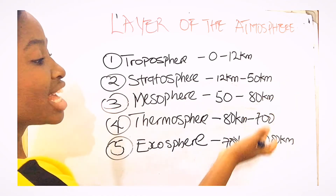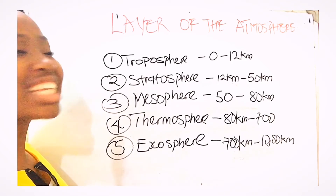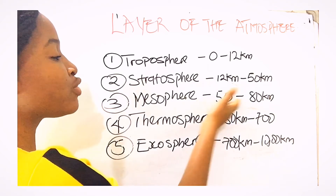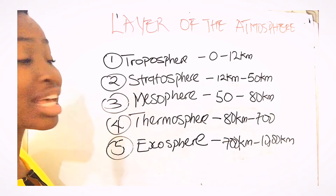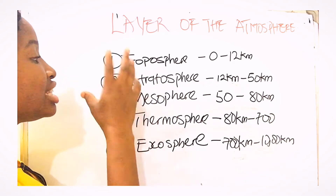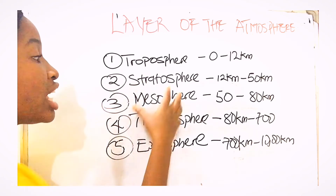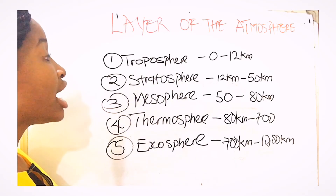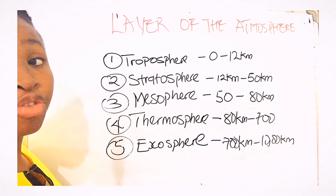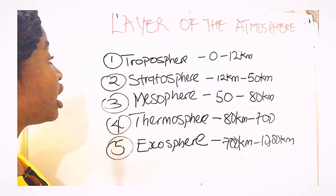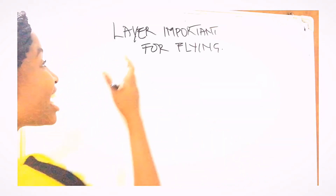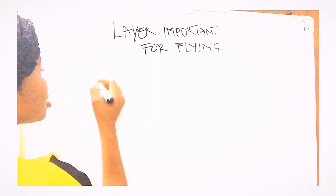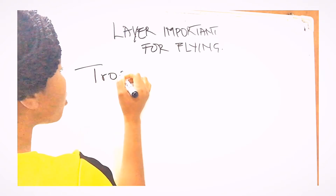What would a commercial aircraft or a student pilot be doing at 50 to 80 kilometers or even 80 to 700 kilometers? From the mesosphere upward, those layers are where space shuttles, satellite launches, and similar activities take place. The troposphere and stratosphere are where pilots are concerned — these are where basic aircraft fly. The most important layer for flying is the troposphere.